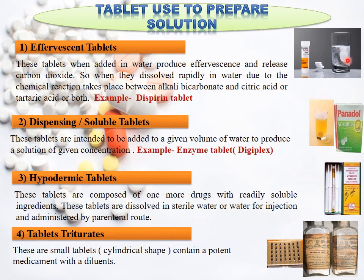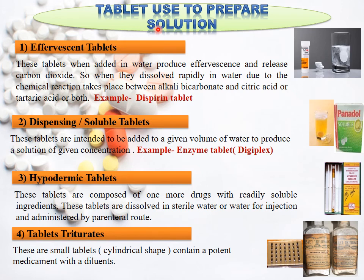An example of effervescent tablets is Disprin tablet. Next is the soluble or dispensing tablet — a solution is prepared and the tablet is given in solution form. An example is Digiplex tablet. Next is hypodermic tablet: these tablets are dissolved in water for injection or sterile water and then administered by the parenteral route. Next is tablet triturates — these tablets have a cylindrical shape and contain potent medicament with a diluent. This is all about tablets used to prepare solution.